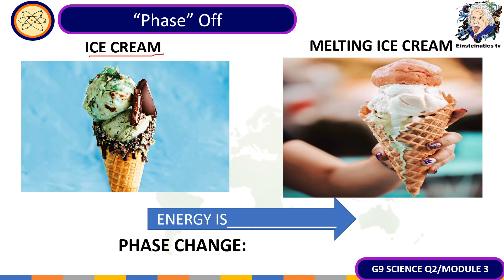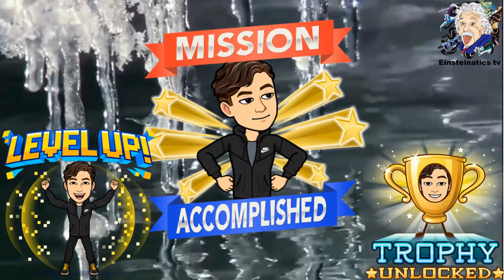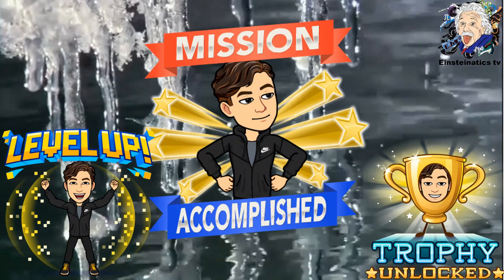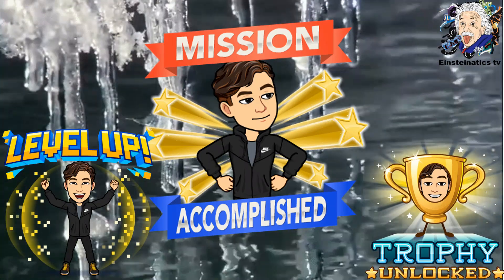For the last example: ice cream turning into melting ice cream. Identify the phase change and whether energy is taken away or absorbed. The correct answer is that energy is absorbed. As the solid particles gain kinetic energy, they start to move away from each other, going from solid into liquid — in the process known as melting. Did you get them all correct? If so, congratulations! That's it for today's video. Don't forget to like, ring the bell, and subscribe for upcoming videos. Einsteinatics out — thank you so much for watching!